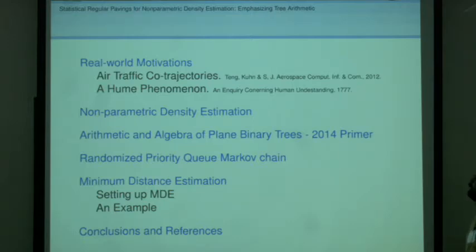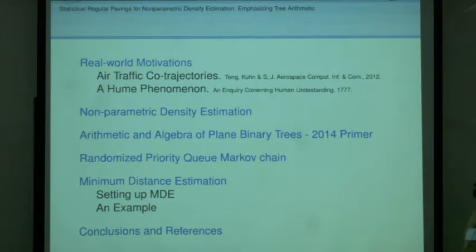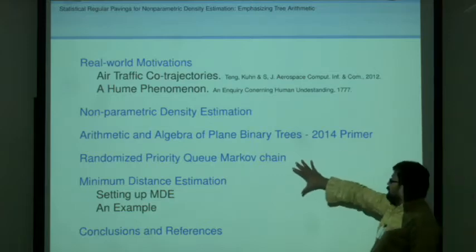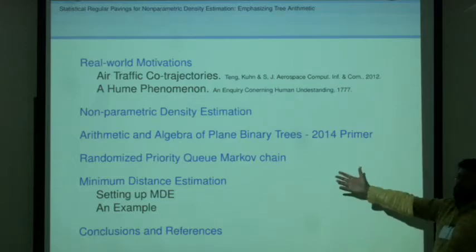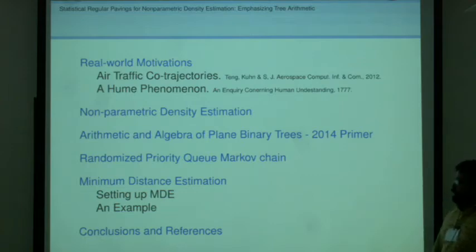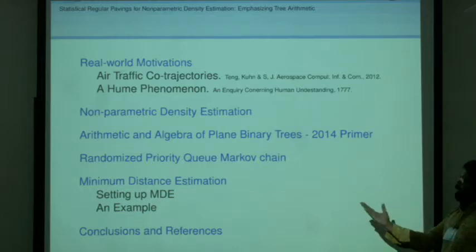Nonparametric density estimation is the main topic. Then we're going to get into arithmetic and algebra of plain binary trees. This is only supposed to take 23 minutes if I do it right. This is something in our primer series, the Center for Computable and Constructive Mathematics in Christchurch, New Zealand. Then there are connections to randomized priority queue Markov chain and minimum distance estimation. It's all about understanding the growth of the complexity, a particular measure of a combinatorial geometric complexity of what you can observe.